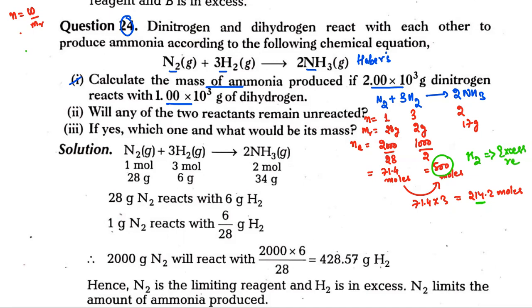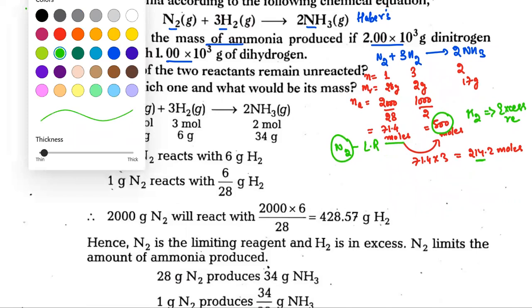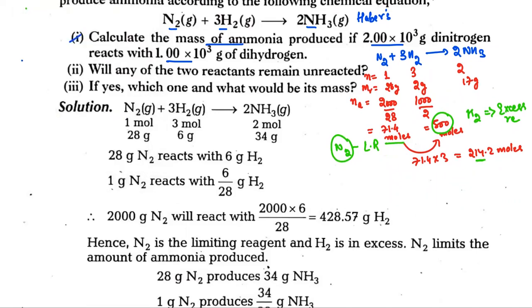This is a reactant which is present in excess, so nitrogen is our limiting reagent. Limiting reagent is the one which determines and controls the amount of reaction. We have asked how much ammonia, and the amount of ammonia depends on nitrogen.